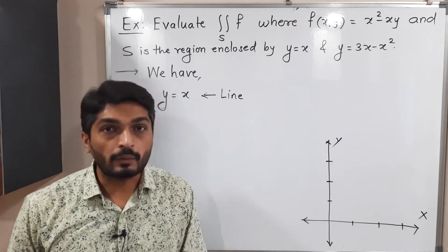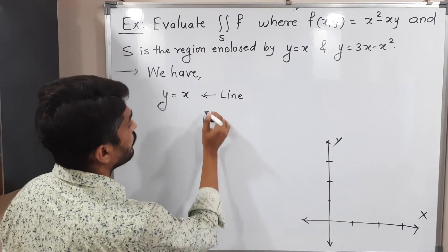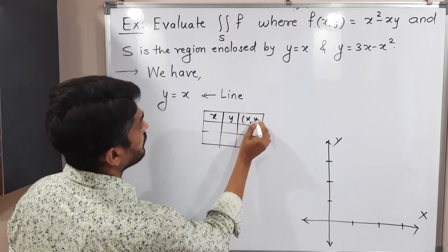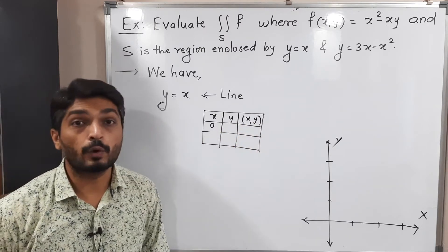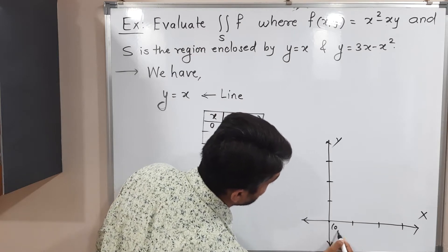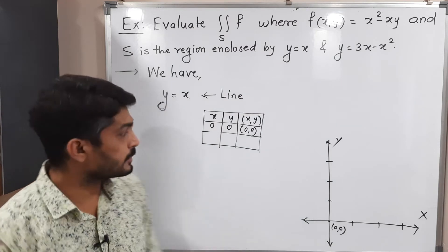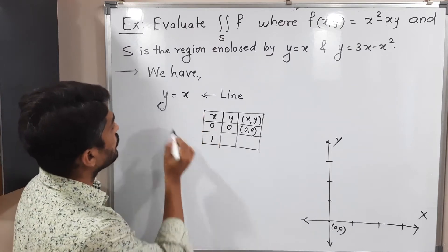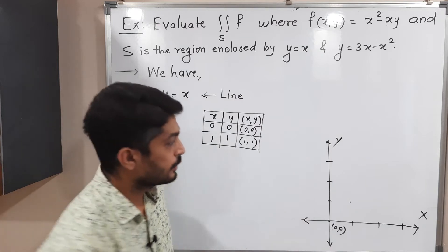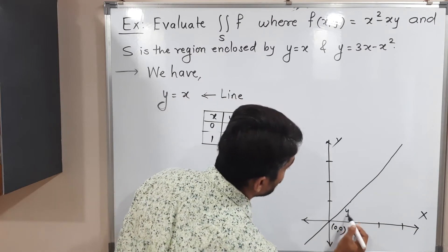To find that line, we need any two points on it, then join them to get a straight line. If x = 0, then y = 0, giving point (0, 0). If x = 1, then y = 1, giving point (1, 1). We join these two points by a line to get y = x.